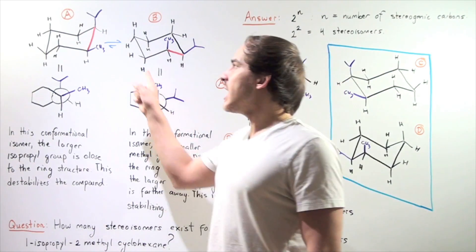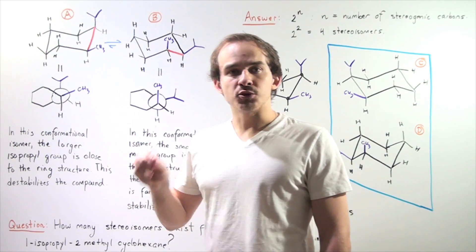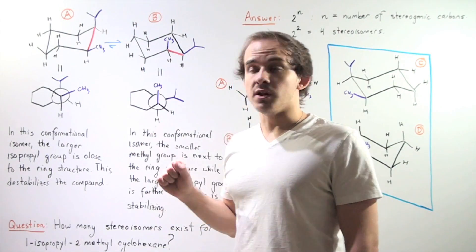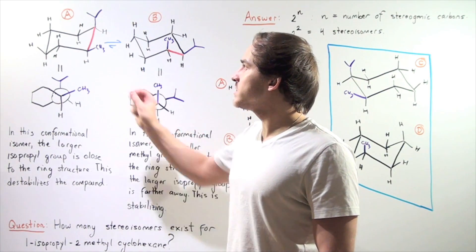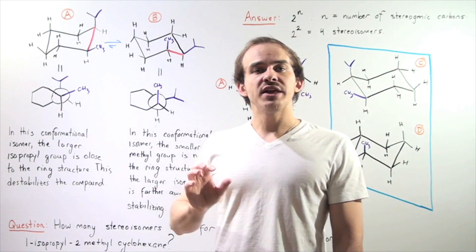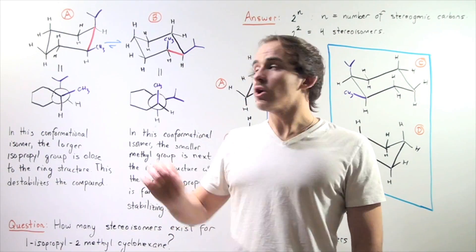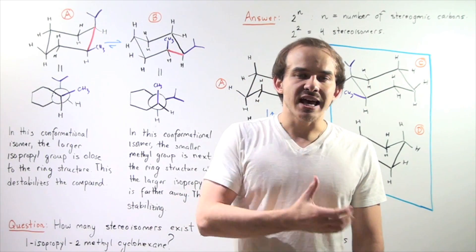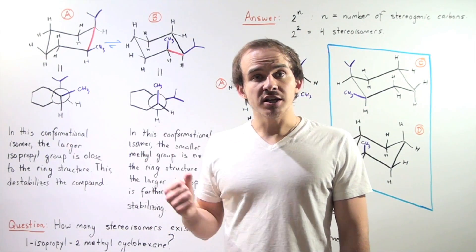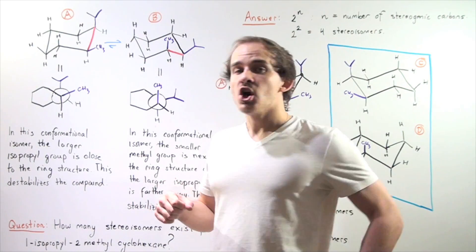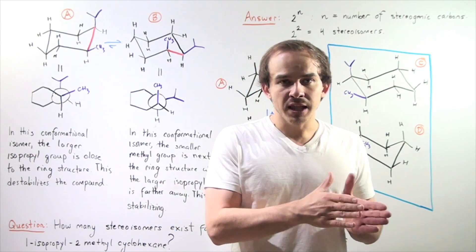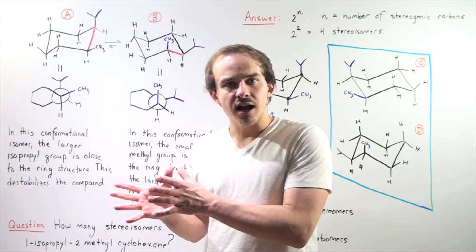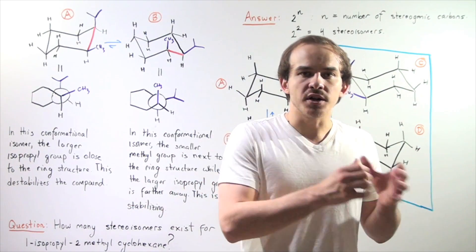That simply means that on our 6-carbon ring, on the first position, we're going to have our isopropyl group, and on the second position, we're going to have our methyl group. Recall that at room temperature, our cyclohexane interconverts from one chair conformation to a second chair conformation. When the interconversion takes place, all the equatorial atoms become the axial atoms, and all the axial atoms become the equatorial atoms.